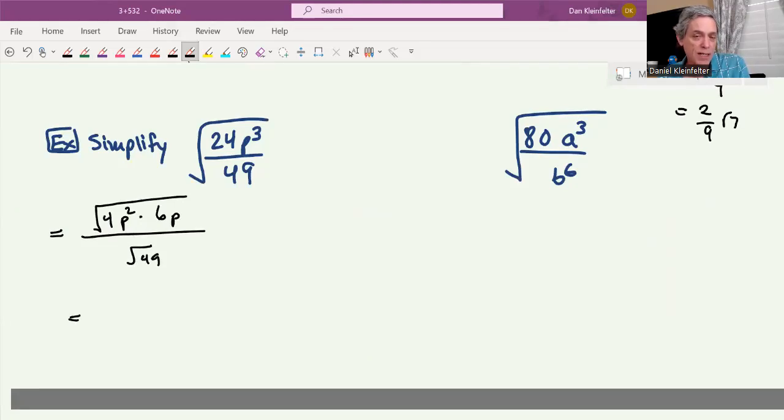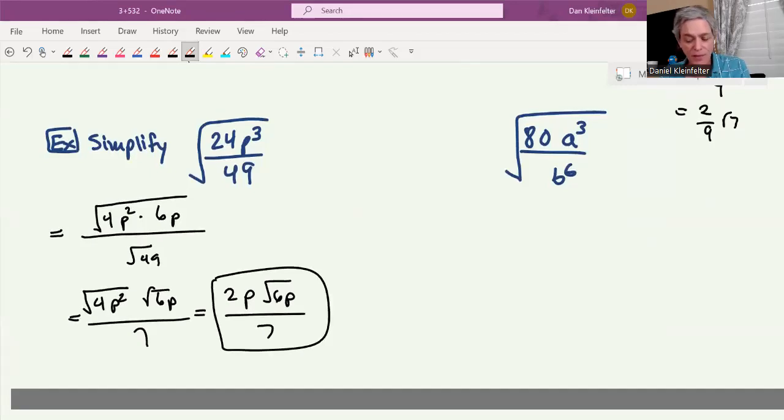So what happened? We separated this radical into a quotient of two radicals. The square root of 24p cubed, I split 24 into 4 times 6, and p cubed I separated into p squared times p. The square root of 4p squared, then we'll have a square root of 6p. Down below, the square root of 49 is 7. The square root of 4p squared will be 2p, and the square root of 6p is the square root of 6p. Down below, we will still have the 7.